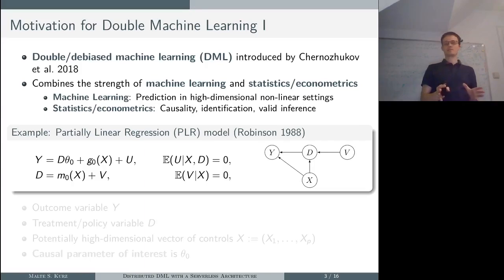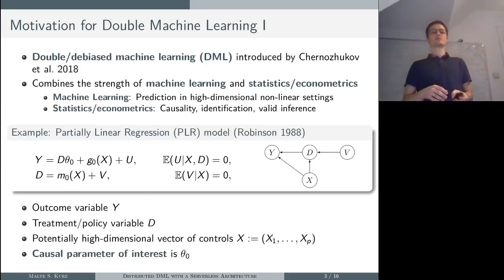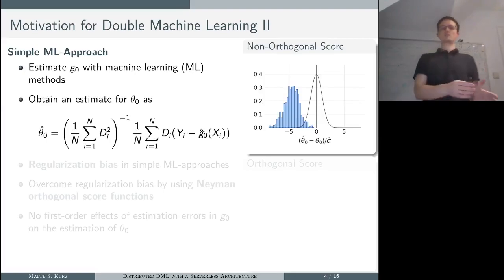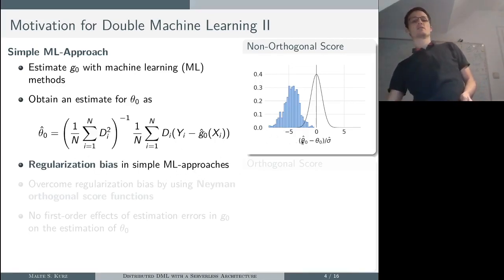Let us consider an example of the partially linear regression model. We have an outcome variable y, a treatment or policy variable d, and potentially high dimensional controls x. We are interested in the effect of d on y, so basically the parameter theta_0, controlling on x. Coming from the typical machine learning perspective, which has a prediction focus, we might consider running a simple approach where we just estimate g with machine learning methods and then run an OLS regression of the residuals on d to obtain an estimate for theta. What happens we can see on the right: that's a histogram of the estimated parameters, and we see there's a severe regularization bias in those estimates.